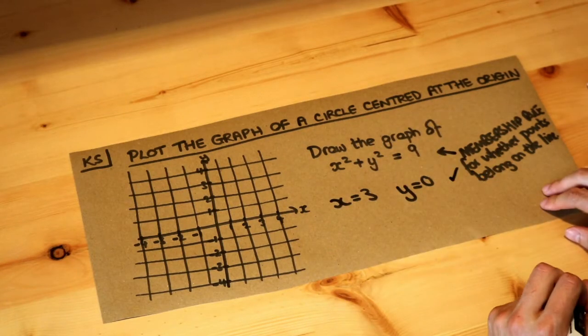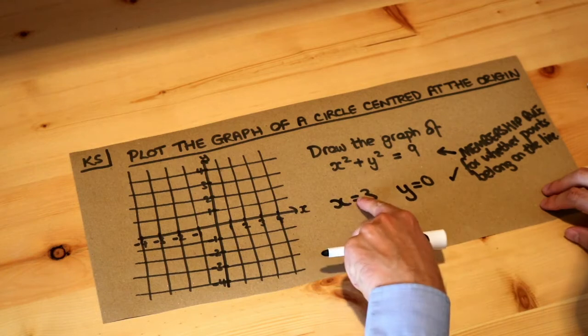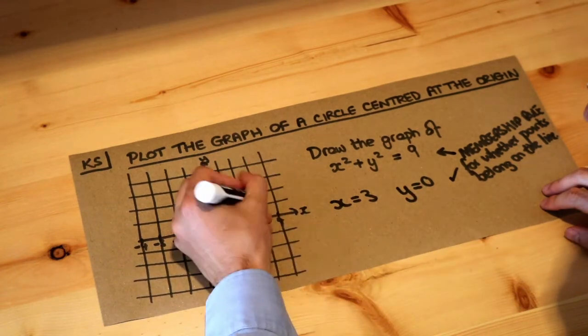So that will be a point on the line. So let's plot that. x is 3, y is 0. x is 3, y is 0 would be here.